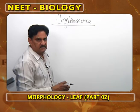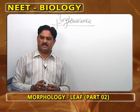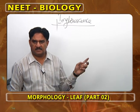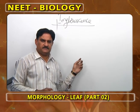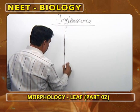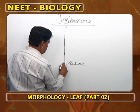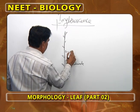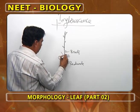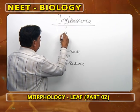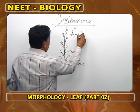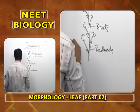Now coming to reproductive morphology, and this reproductive morphology is inflorescence. The stem after growing sometime produces a special, weak, delicate branch called peduncle. On the peduncle, small leaf-like structures are produced called bracts. From the axils of the bracts, either pedicellate flowers or sessile flowers are produced. This method of arrangement of flowers on the peduncle is called inflorescence or anthotaxis.